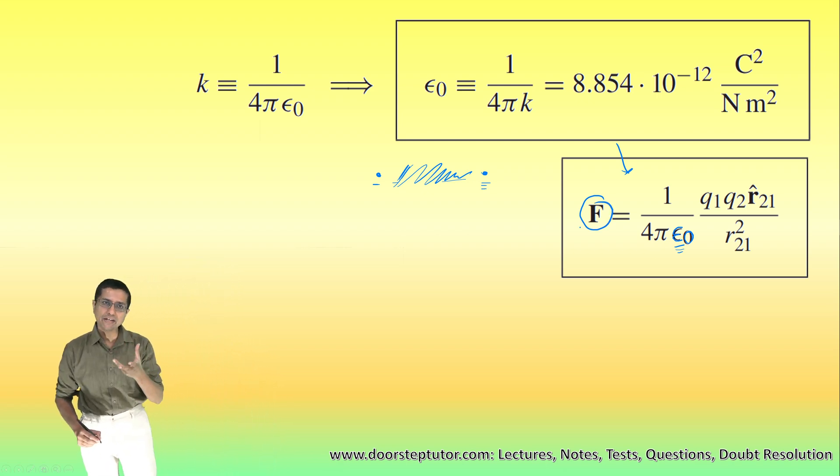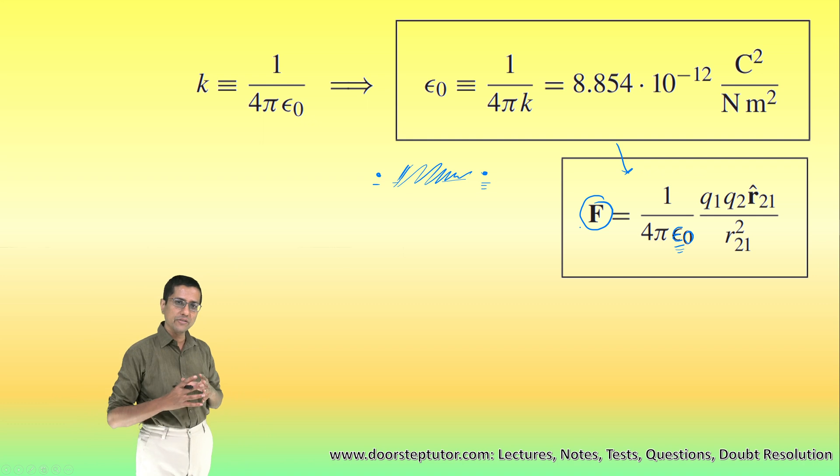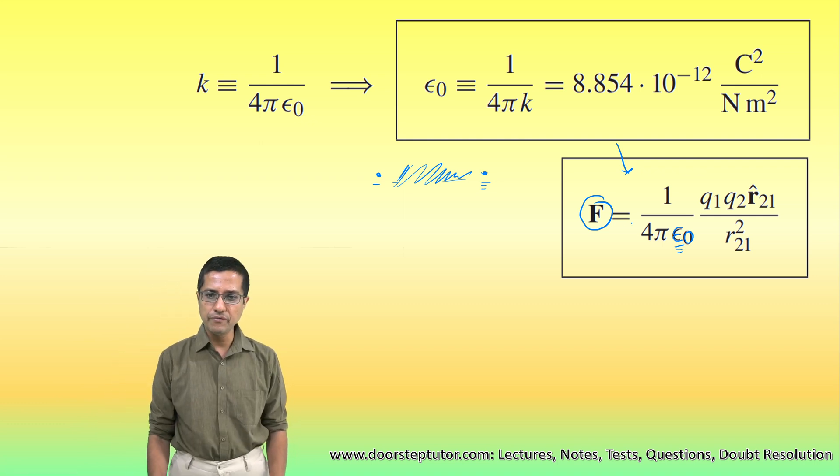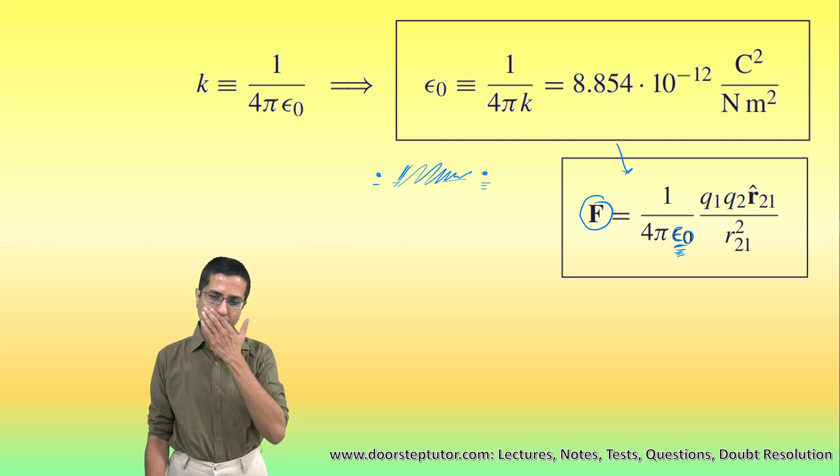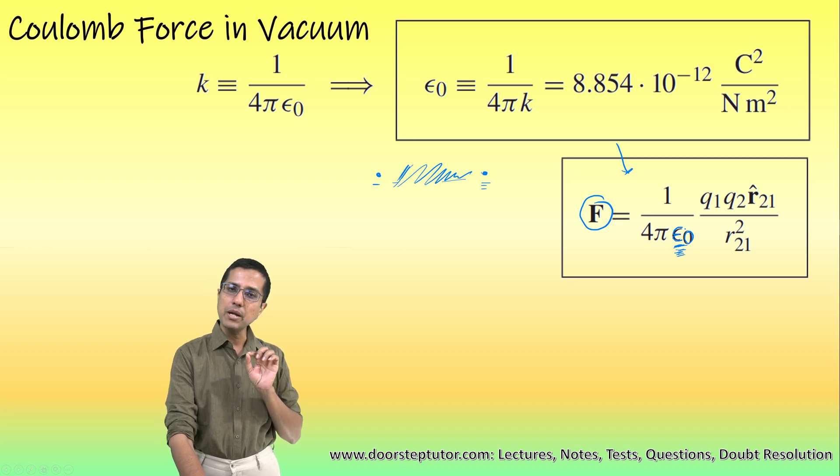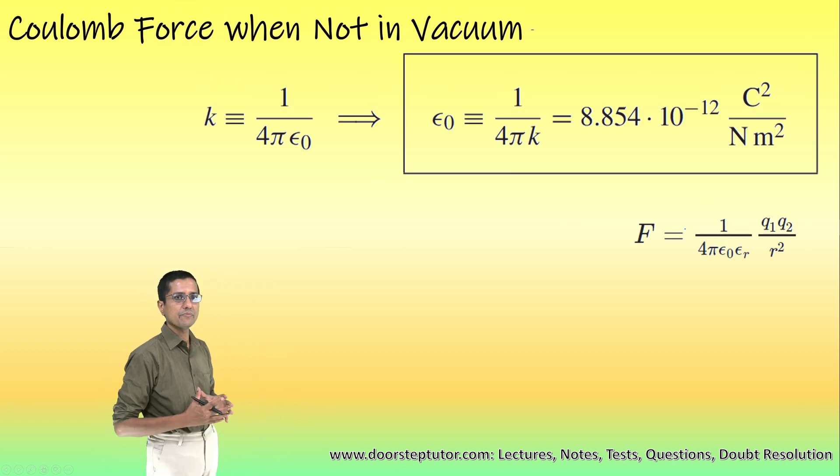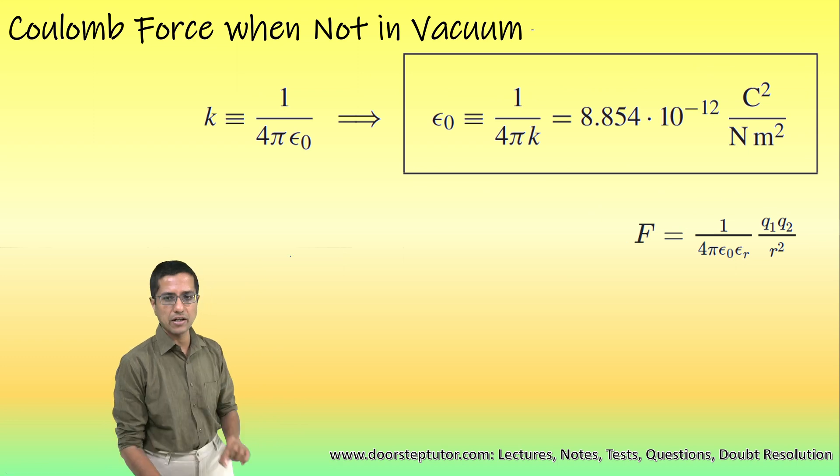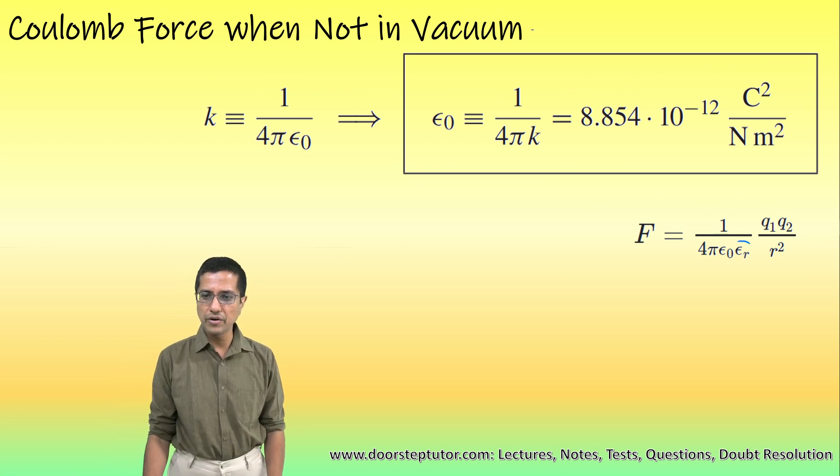In the case of vacuum, there is no absorption and we only have a single term here in this force formula which is 1 by 4 pi epsilon naught. In the case of other mediums, there is an additional term which comes along which is known as epsilon r or relative permittivity.